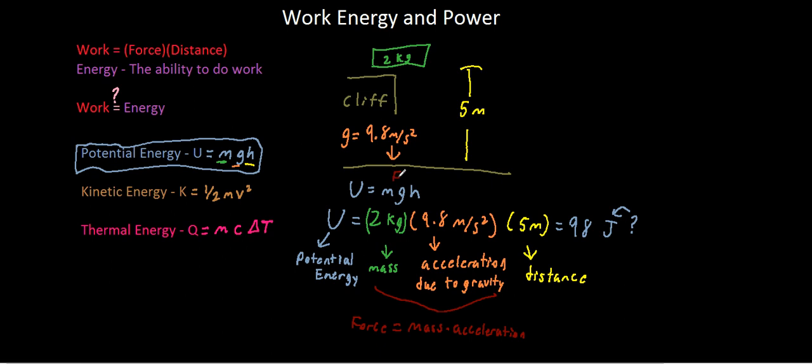Therefore, this equation says force times distance. Therefore, these formulas are essentially the same. And 98 joules is the work that would be done if this were to fall. So there you have it. This is joules because it is work, and work does equal energy.